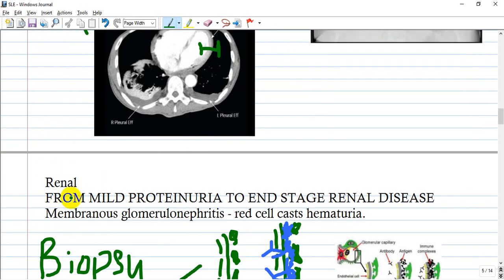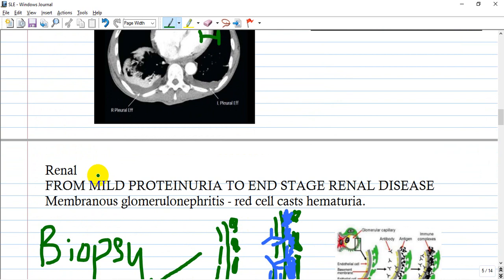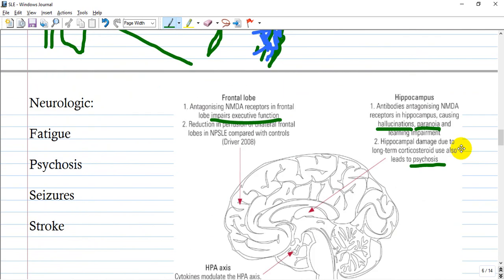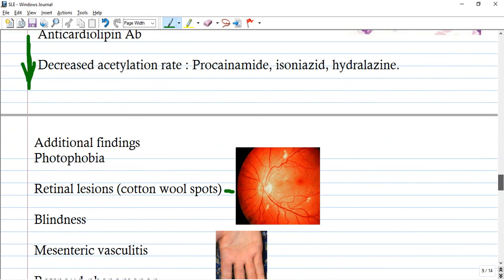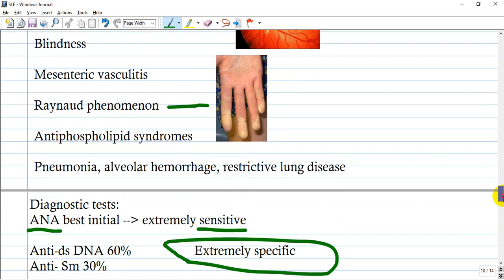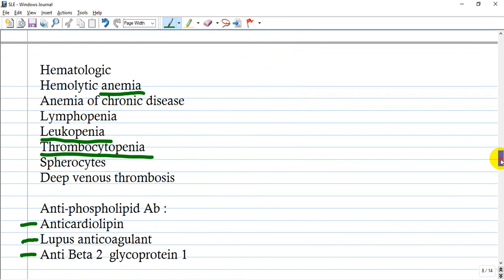serositis or serous layers, renal involvement, neurological, hematologic, and even some additional findings that are not so characteristic but can also be found.